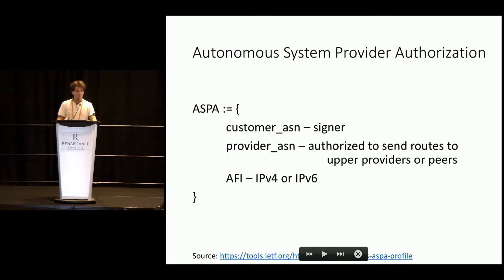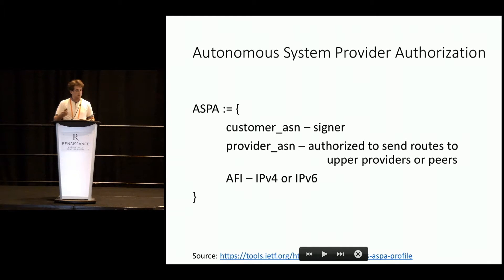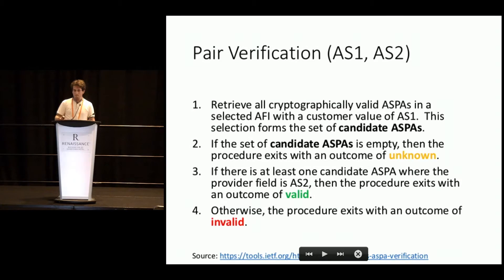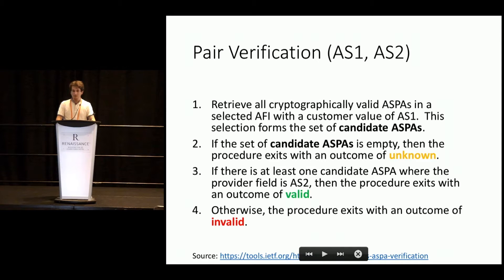For prefixes received from customers and peers, all pairs of different autonomous system numbers in the path must be customer-to-provider. So what we need is a distributed database of signed objects that will say 'these are my providers.' And here we are getting to RPKI again. What we are suggesting is a new RPKI object — ASPA — that will give ISPs an opportunity to list their providers. With these objects, it will enable other ISPs to detect hacker activity for the address space.